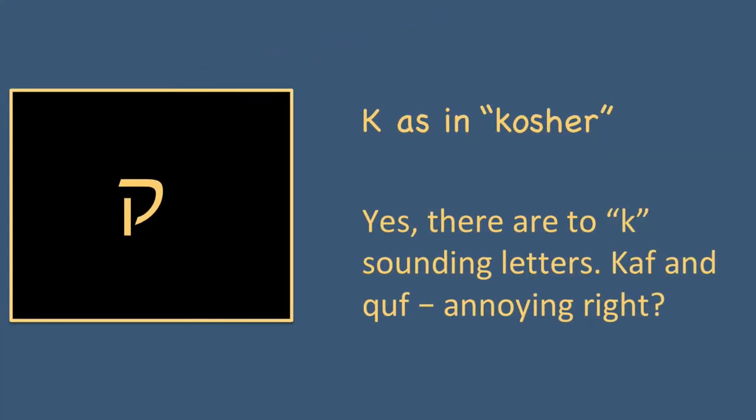The final new letter is the letter Kuf, and it makes a K sound as in the word 'kosher.' There are two K-sounding letters — the Kaf, which is the backward C, and this letter, the Kuf. Yes, it is a little annoying. Sometimes people remember that this one is pronounced Kuf and not Kaf because the Kuf extends down below the line, so it's somehow longer.